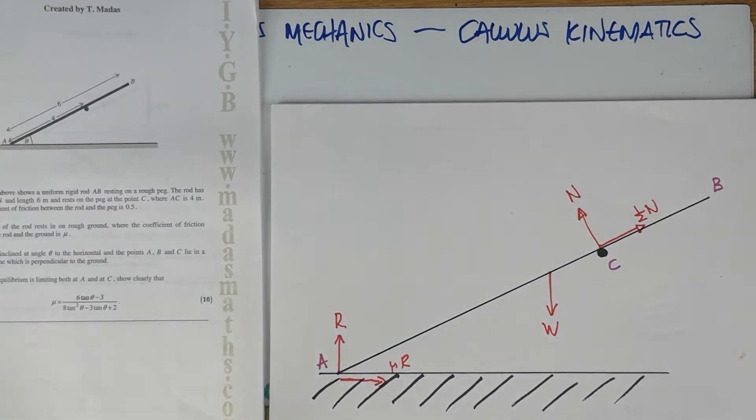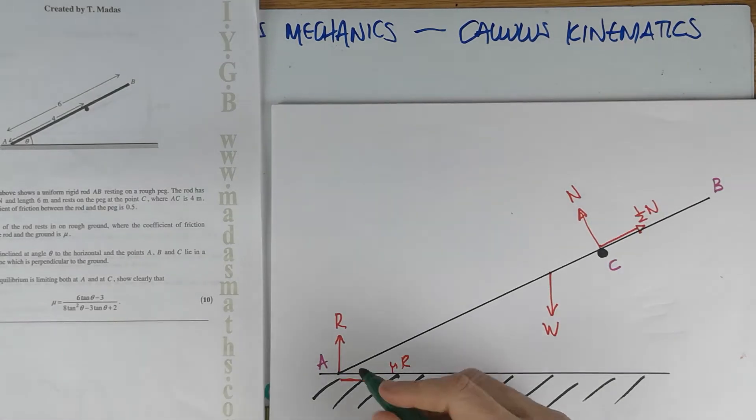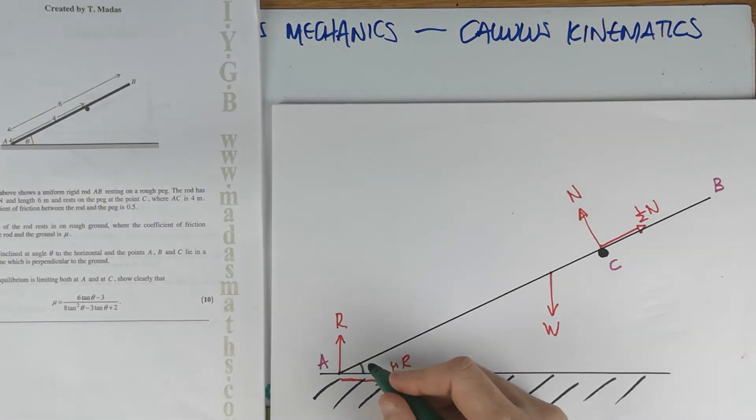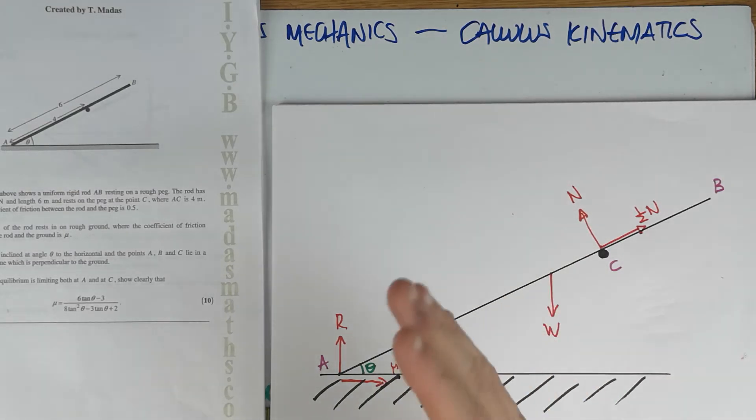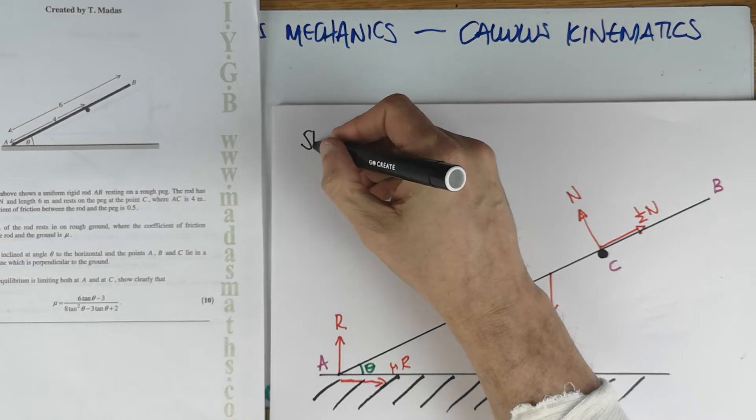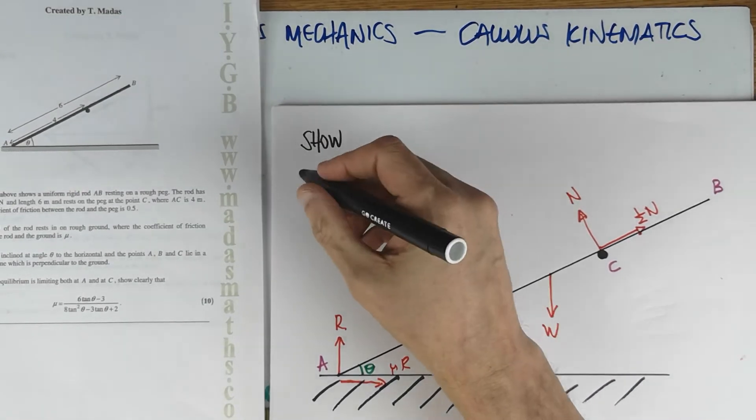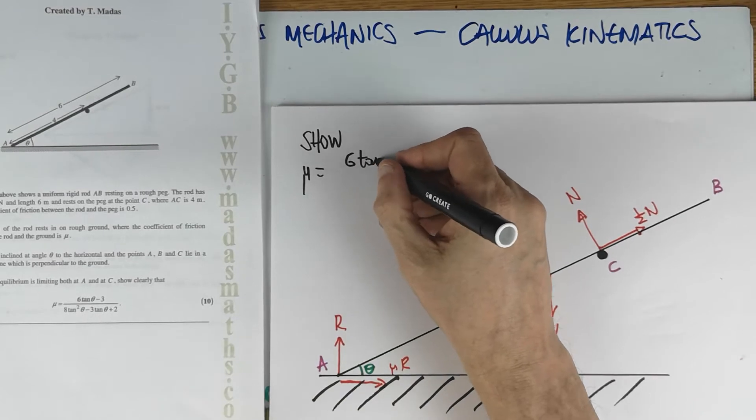The rod wants to slide downwards like this. So the friction here is going to be μR. The coefficient of friction between the rod and the ground is μ. The rod is inclined at an angle θ to the horizontal. Let's get a different color pen. Where is the angle θ? There it is. It's also marked in the picture. And what we have to show, I'm going to put it up here, that μ is this mess.